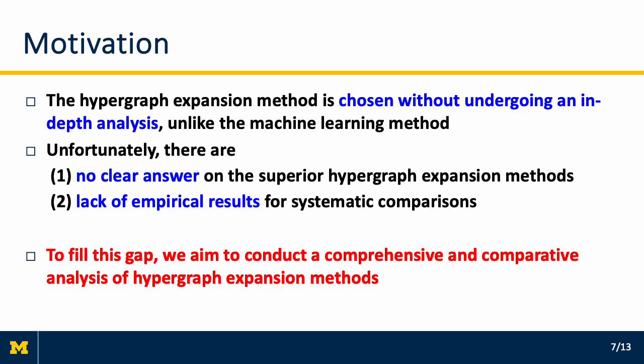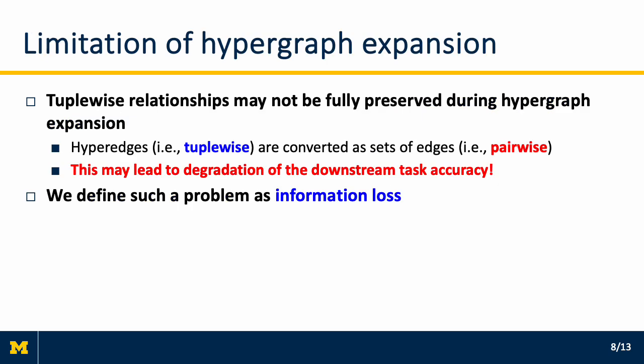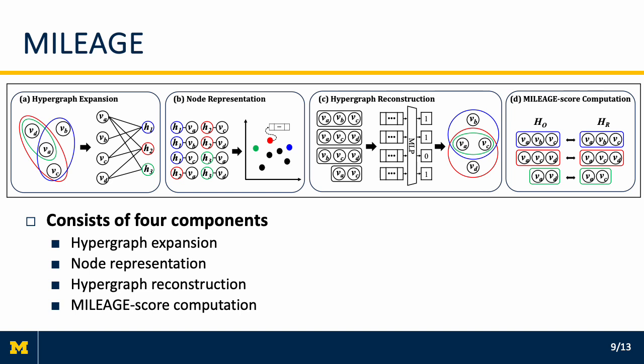Unfortunately, there are no clear answers on the superior hypergraph expansion method, and there is a lack of empirical results for systematic comparisons. To fill this gap, we aim to conduct a comprehensive and comparative analysis of hypergraph expansion methods. Tuplewise relationships may not be fully preserved during hypergraph expansion, because hyperedges are converted as sets of edges representing pairwise relationships. This may lead to degradation of downstream task accuracy. In this paper, we define such a problem as information loss.